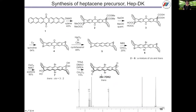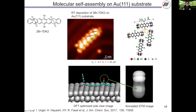This is the synthesis of 2Br7DK2 from heptacenequinone. This is the NMR spectra of 2Br7DK2. This is the STM image after the deposition. Each line shows each molecule. The interaction between the bromine and the hydrogen on the next molecule causes this molecule to arrange in this pattern. The bright spot is the benzene ring and the less bright spot is the diketone part. The molecule is very flat on the gold surface.